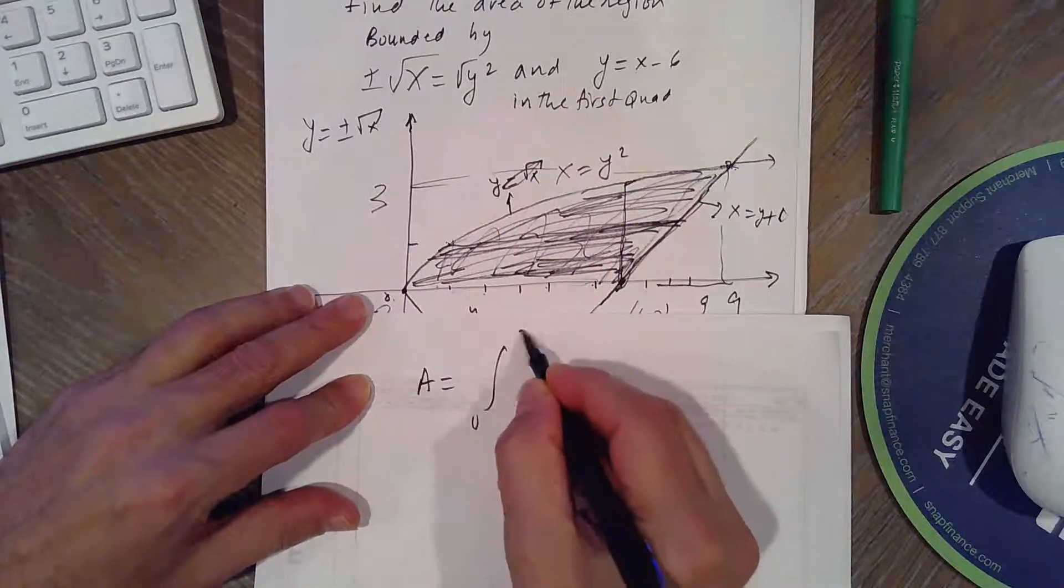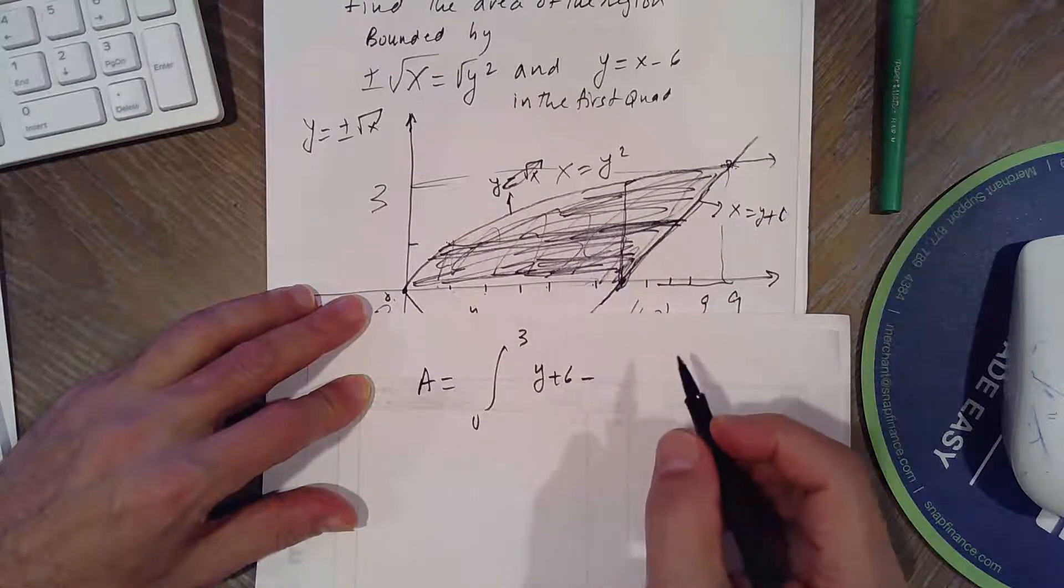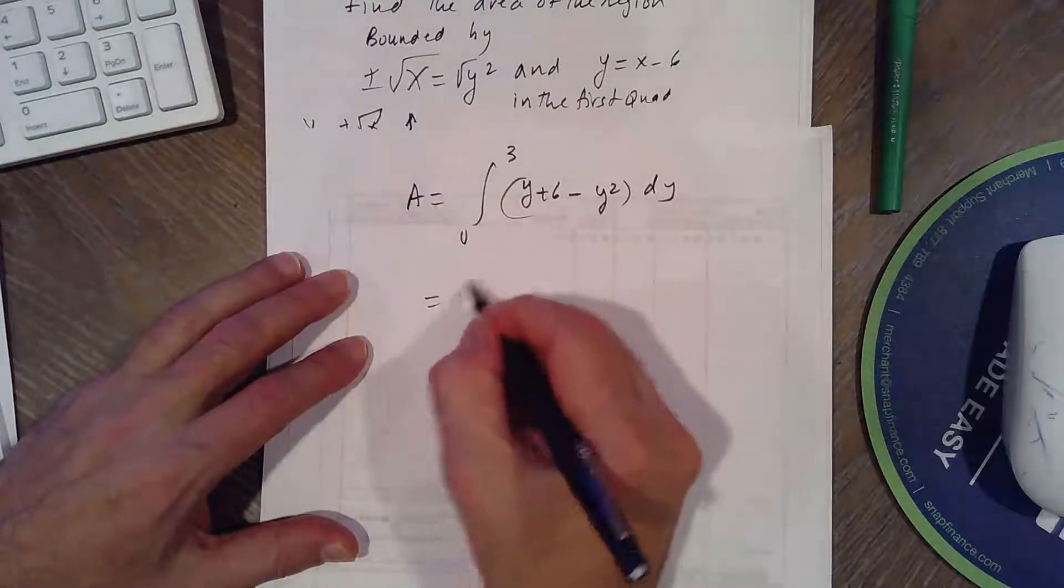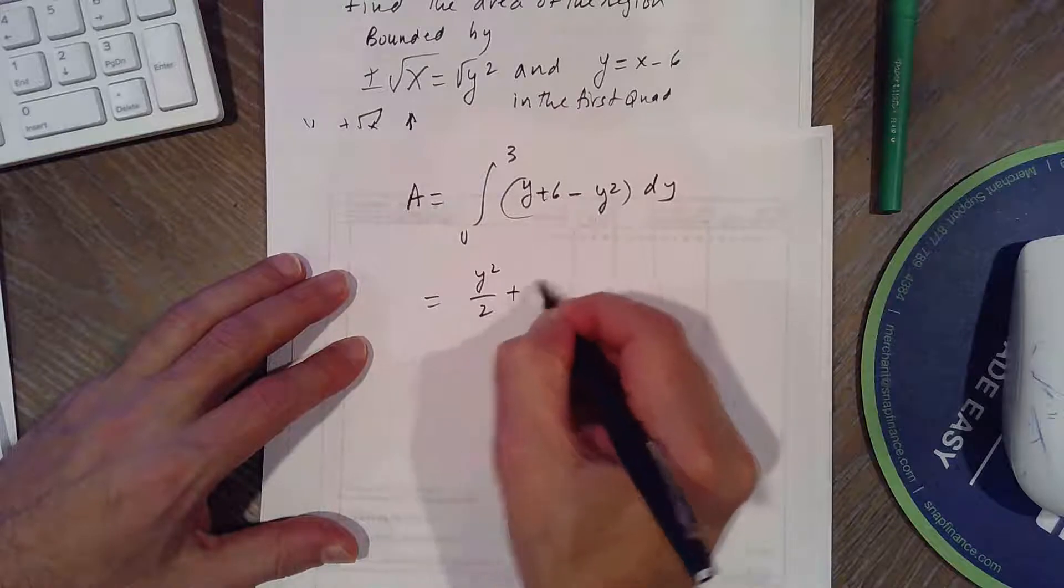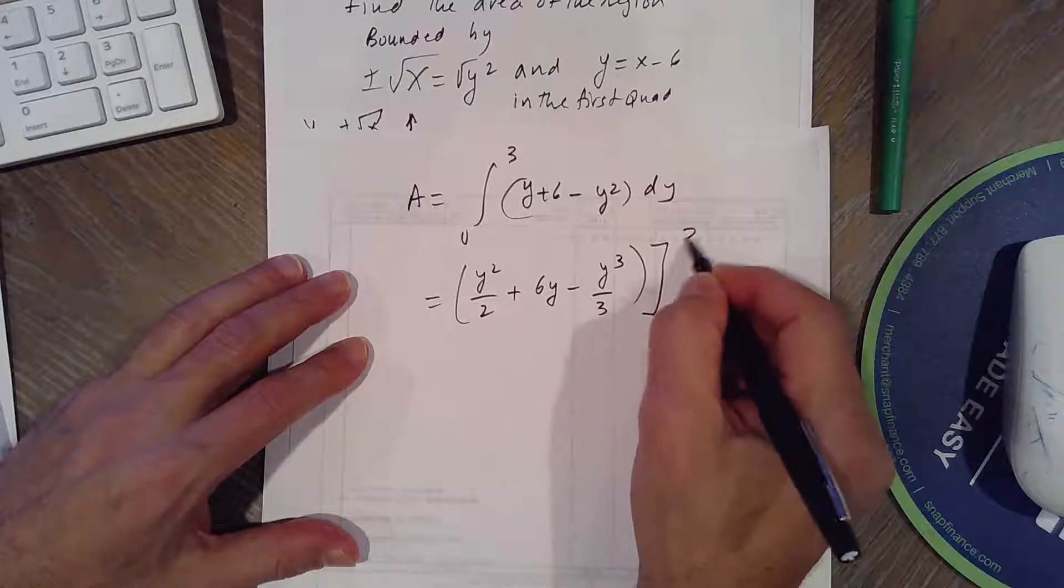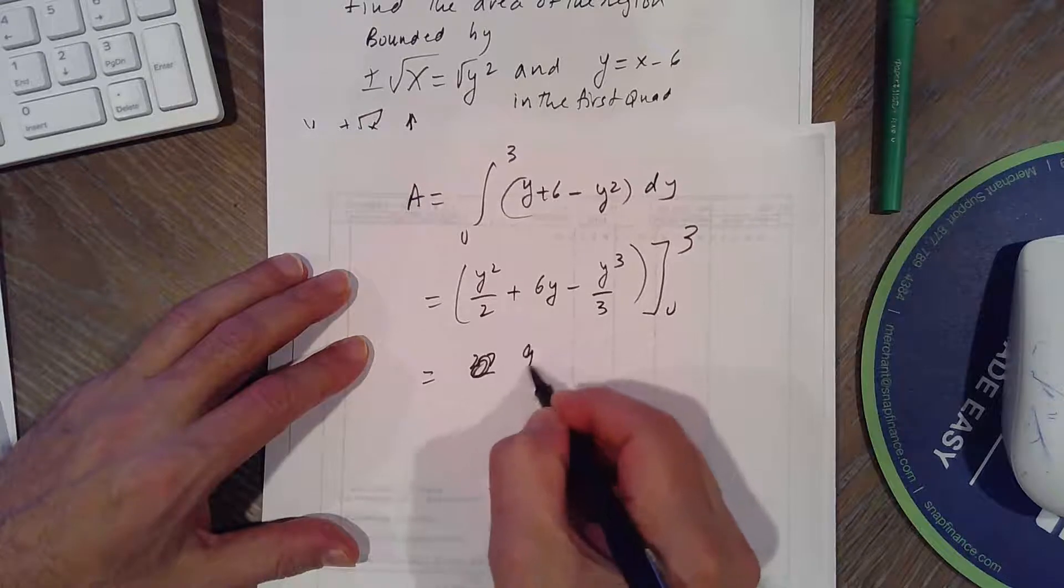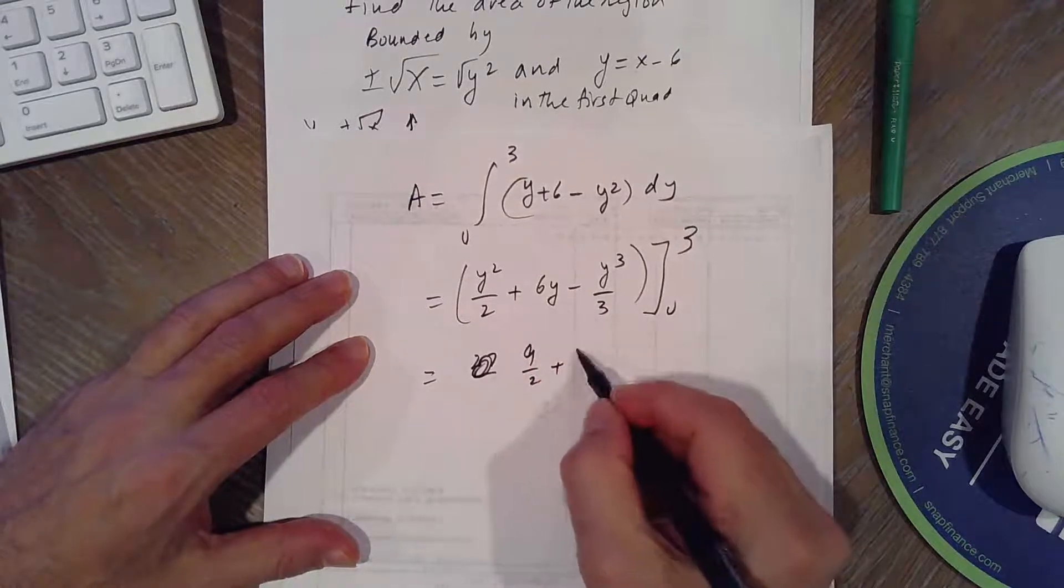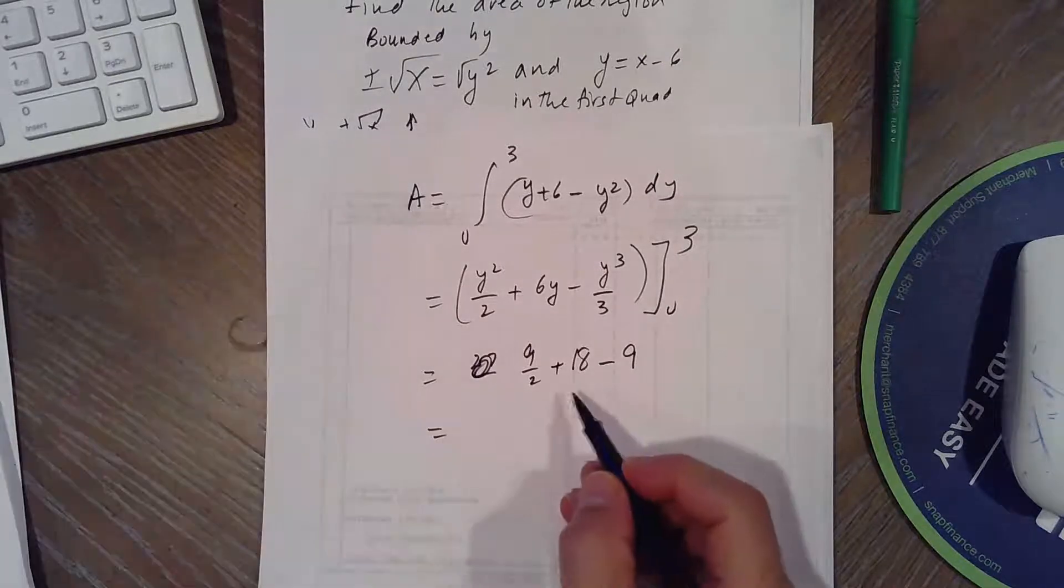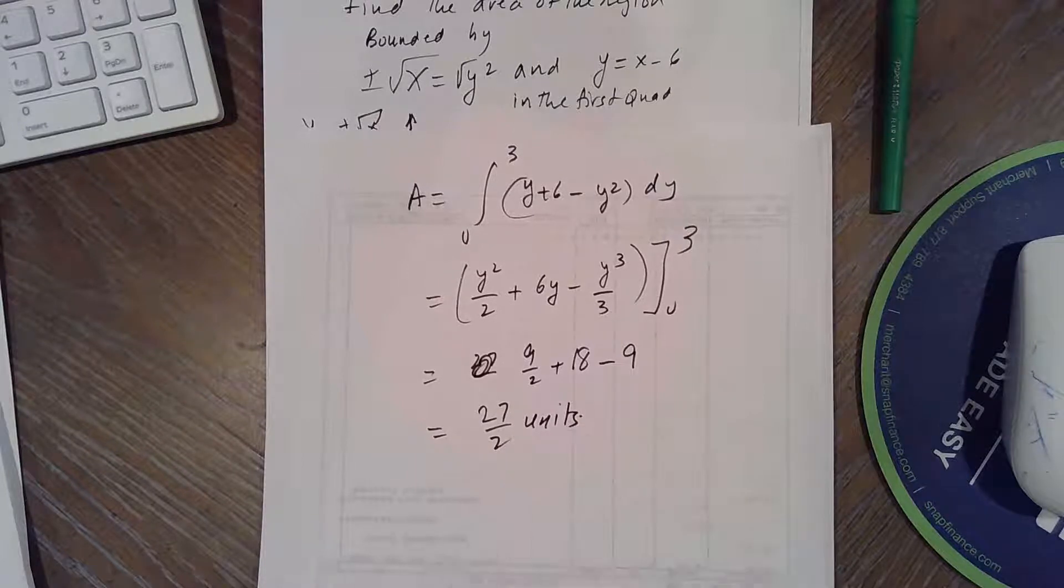0 to 3, right, Y plus 6, minus X equals Y squared. So if you integrate that, it will be Y squared over 2 plus 6Y minus Y cubed over 3. Between 0 and 3, so it's 27 over, I'm sorry, 3 squared is 9. 9 over 2, 6 times 3 is 18. 27 over 3 is 9. So it's 9 over 2 plus 18 minus 9, which is 27 over 2, of course, the same as the other answer.